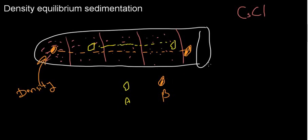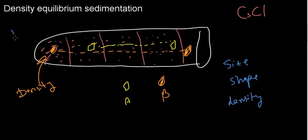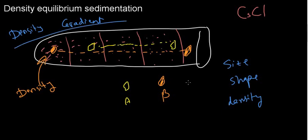In this way, we can discriminate according to size, shape, and density. It's really important to know that this method uses a density gradient — just as we mention a pH gradient for isoelectric focusing, we use a density gradient for density equilibrium sedimentation. It's nice to know cesium chloride; you don't really need to know its name or what it does, but it's good to know these abbreviations just in case you're asked.